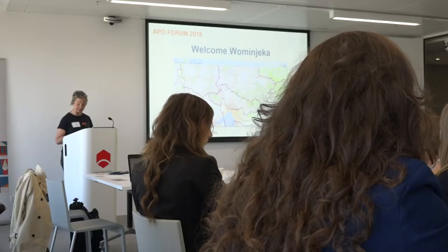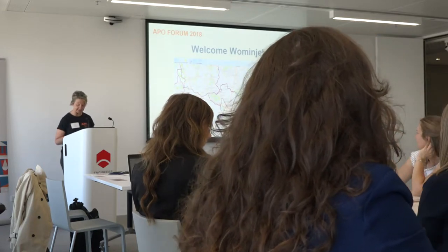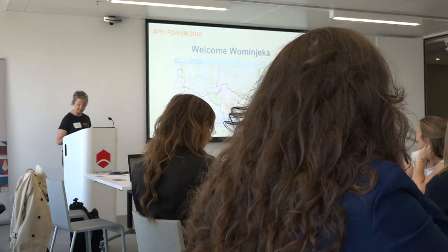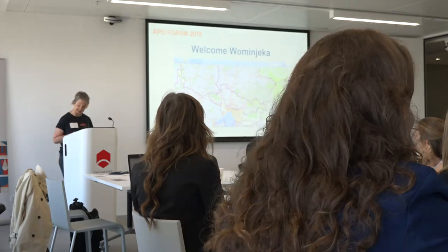We came across this map that the Victorian government provides online showing the areas of Victoria and the traditional owners that have been acknowledged across the state. It's a good example of how a fairly simple set of data can be displayed in an interesting and useful way that not only brings to life the data, but helps to inform the whole community about the ongoing negotiation of Aboriginal people with the state.